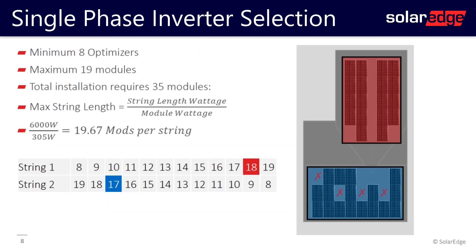You always want to consider how the modules are going to get strung to the inverter. With 35 modules, to find the maximum string length I take the maximum power per string — 6,000 watts — divide by the module wattage of 305 watts, and I find 19 modules per string. The east-west arrays each have nine modules for a total of 18, so I can put 18 modules on a single string. The south-facing array is 17 modules, so that goes on a single string.